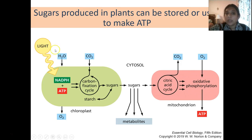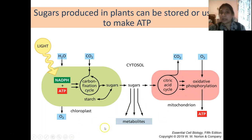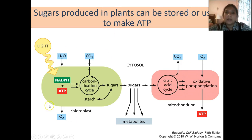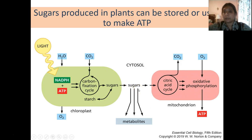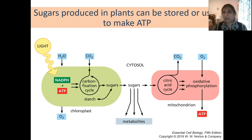If sugars are used for ATP production, they go into the cytosol and get converted through glycolysis, producing pyruvates, and then go into the mitochondria for the citric acid cycle and oxidative phosphorylation through the typical electron transport chain. In the chloroplast, NADPH and ATP production from the light reactions and the carbon fixation cycle in the dark reactions produce sugars and starch. These sugars can also be broken down in the cytosol into different metabolites needed for glycolipid or glycoprotein formation.